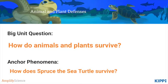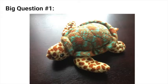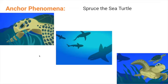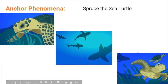Our big unit question is: how do animals and plants survive? We approach this question throughout the unit by looking at a specific animal, Spruce the sea turtle. Students investigate how Spruce gets the things she needs, such as eating food, breathing air, avoiding predators, and how her offspring survive as well.